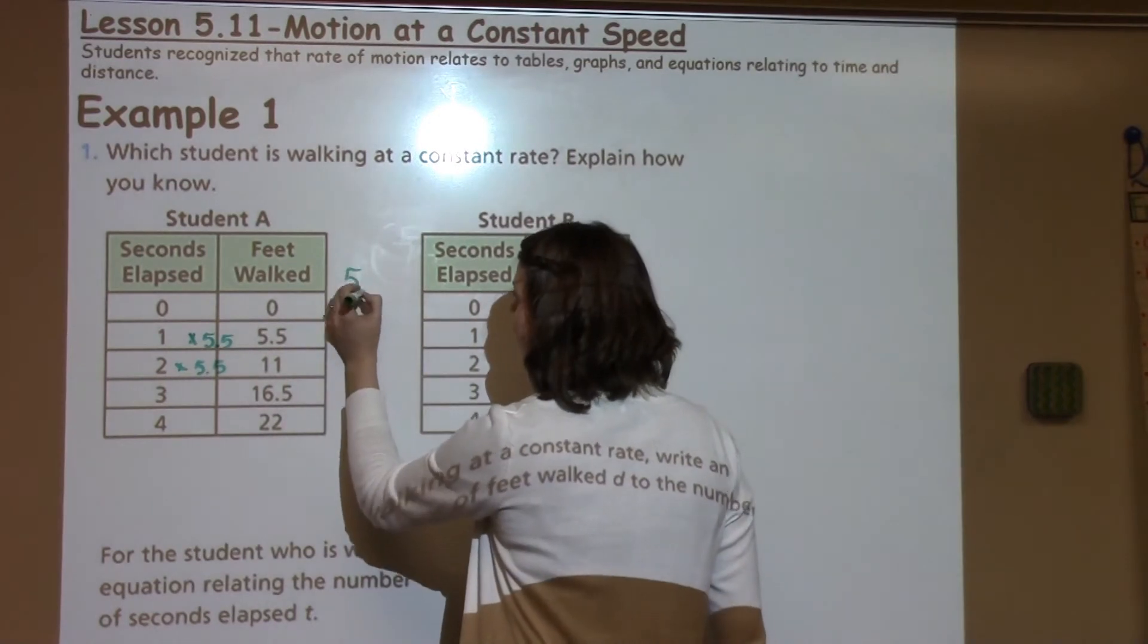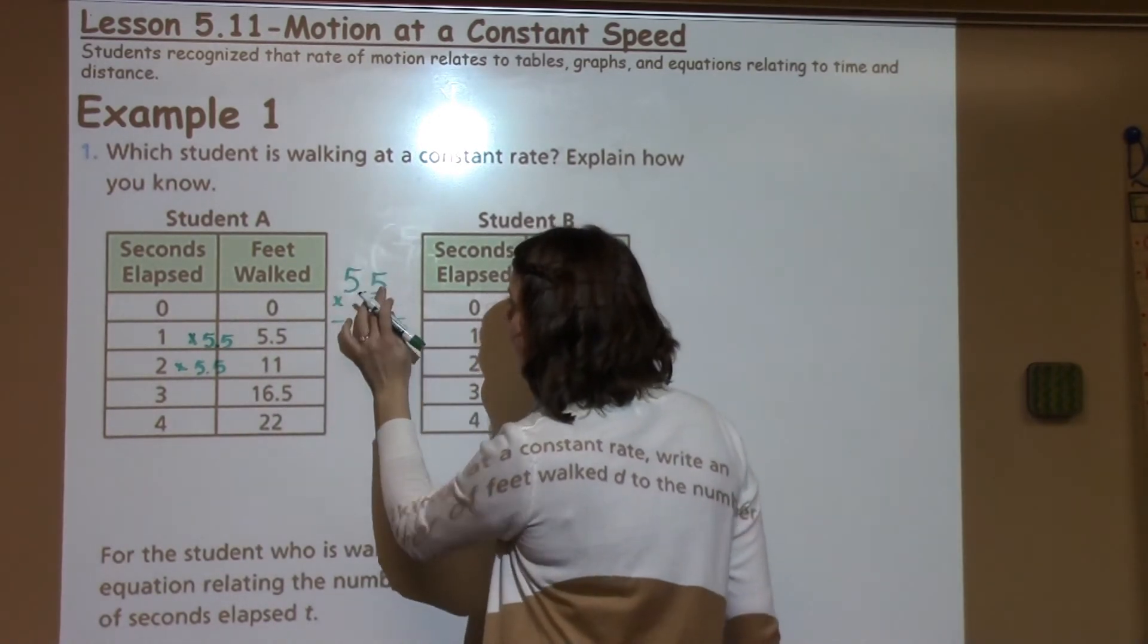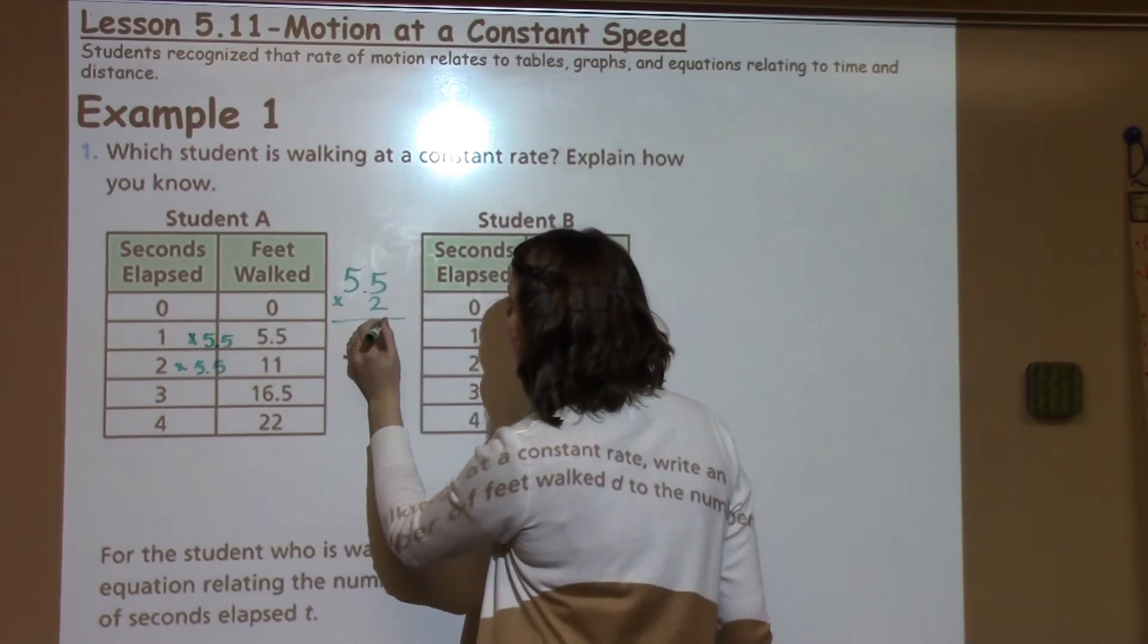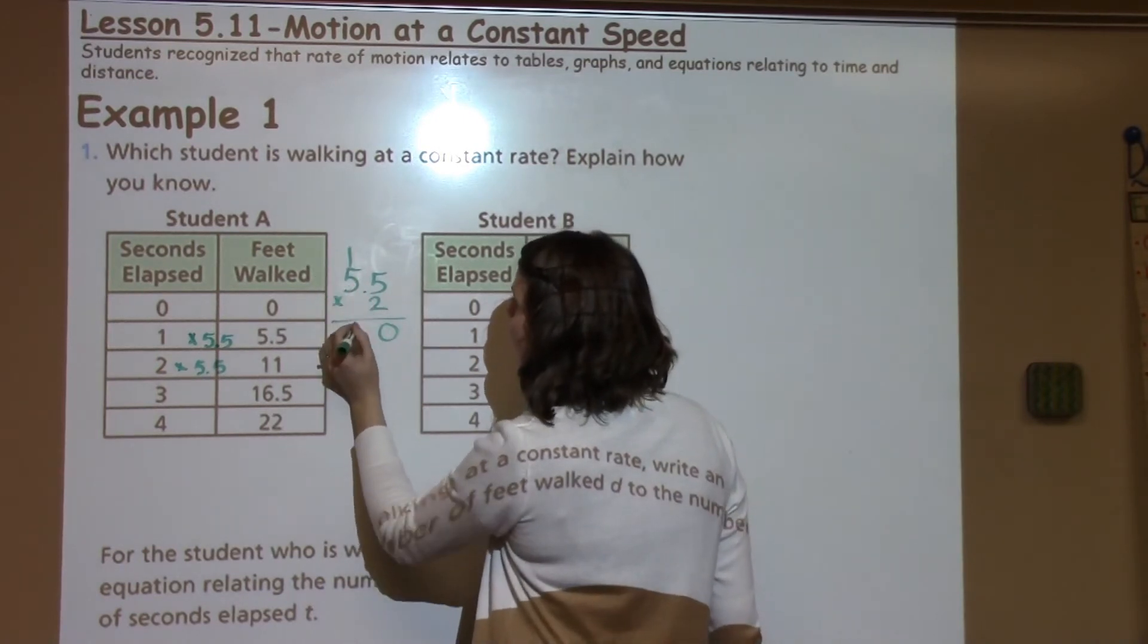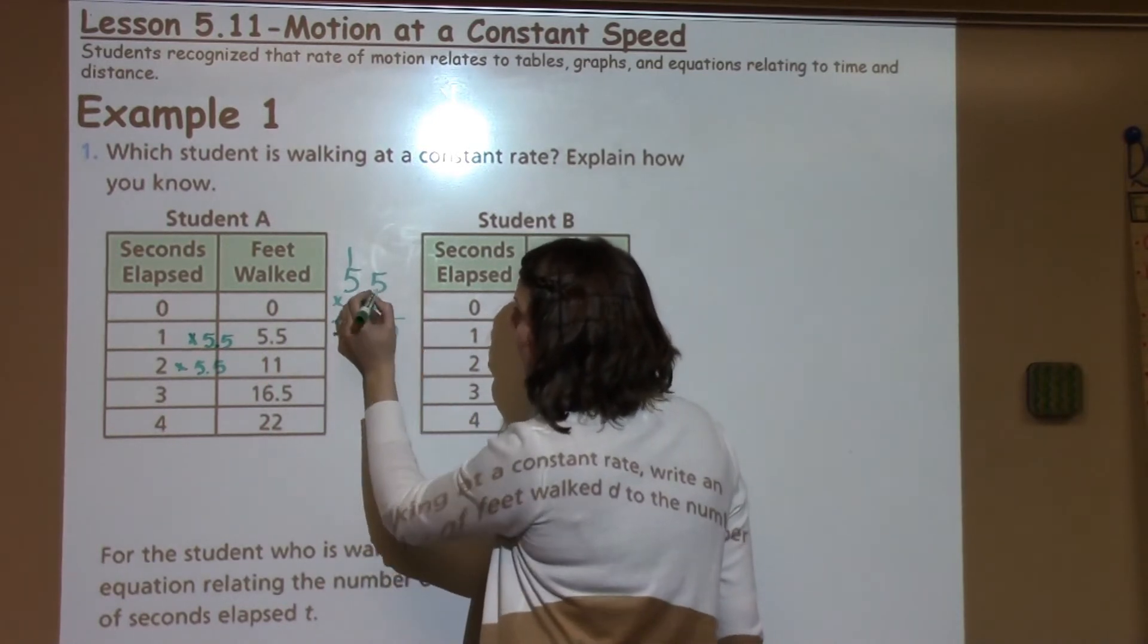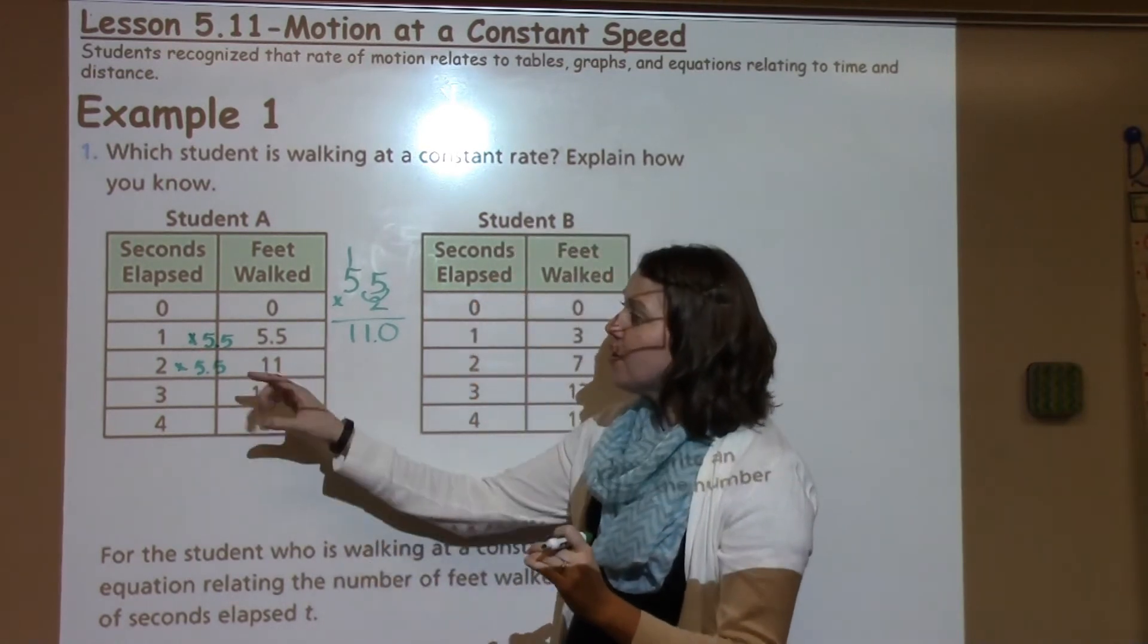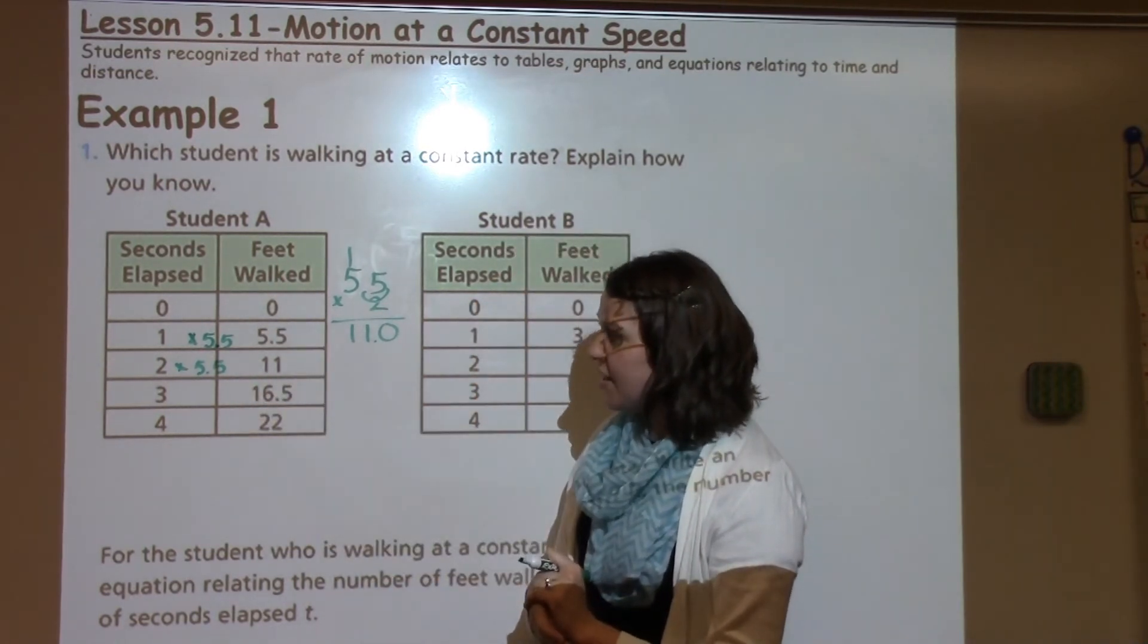If I take 5.5 times 2, I have 5 times 2 is 10, and 0.5 times 2 is 1, giving me 11. So I have to move that over one hop with my decimal, and I can see that it is 11. So this one looks like it's increasing at a constant rate.